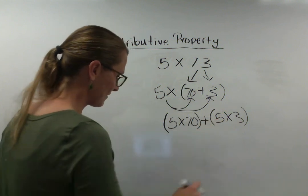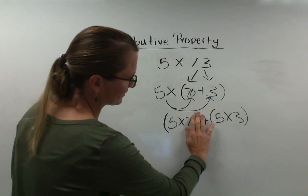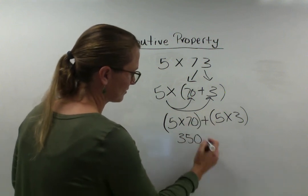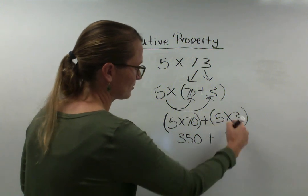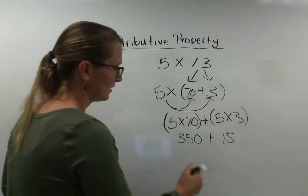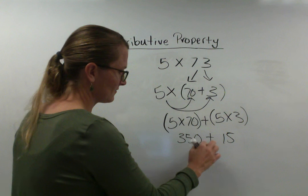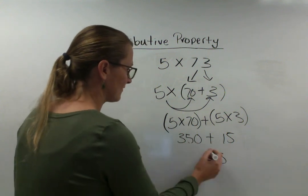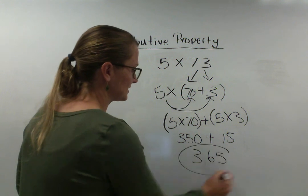So we get 5 times 70. So I can just do 5 times 7 is 35. And then add that 0 to the end. And then 5 times 3 is 15. And so I'm just going to add the 15. So I'm going to add the 2 ones. 0 and 5 is 5. 1 and 5 is 6. I get 365 is my answer.